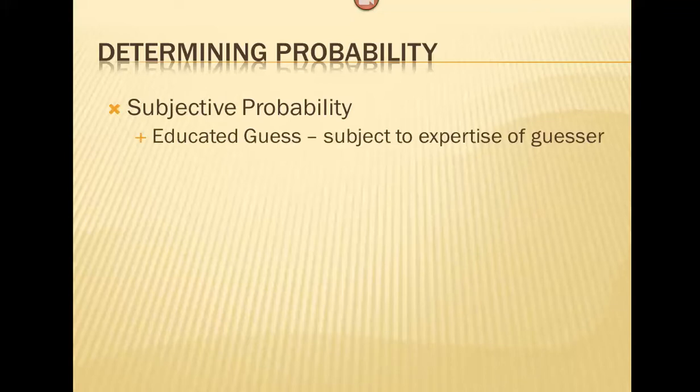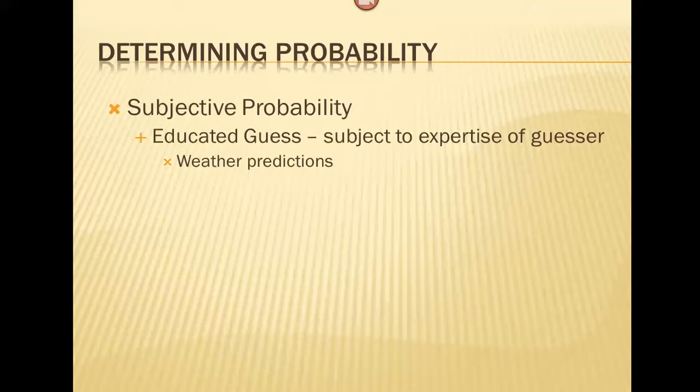When we determine probability, there are three different types. First is subjective probability — basically an educated guess — and the reliability of it is subject to the expertise of the guesser. A great example is weather predictions. A week ago the prediction for today's weather was rain, but there isn't a drop of rain in the sky as I'm recording this. Economic predictions are much the same — sometimes weather predictions can be more accurate than economic predictions.